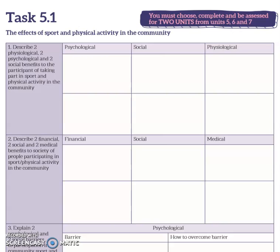Number one here asks you to describe two physiological, psychological and social benefits to the participants of taking part in sport and physical activity in the local community. By psychological we're talking about the mental benefits; by social we're talking about how it impacts on people; and physiological relates to the body. You need to briefly describe in a couple of sentences each some of the psychological, social, and physiological benefits of taking part in community sports outside of school hours.